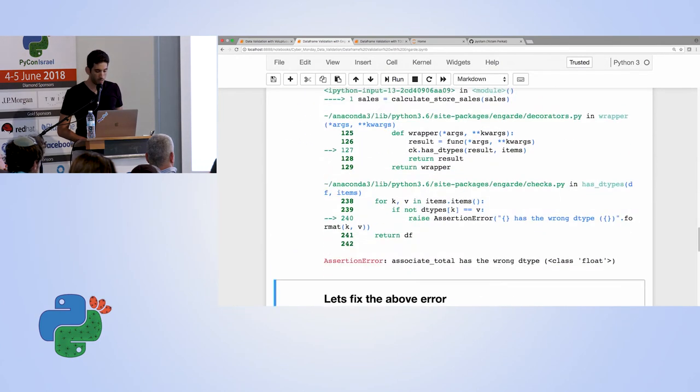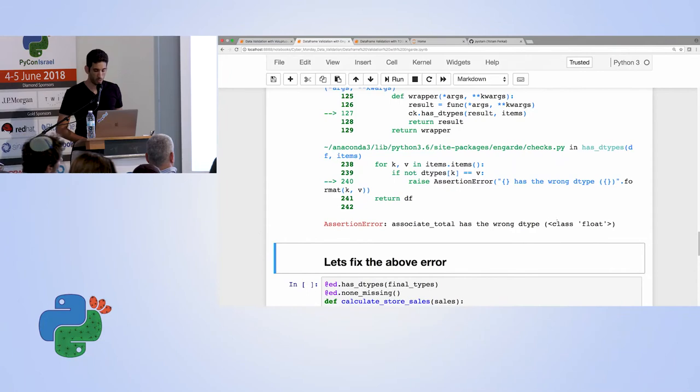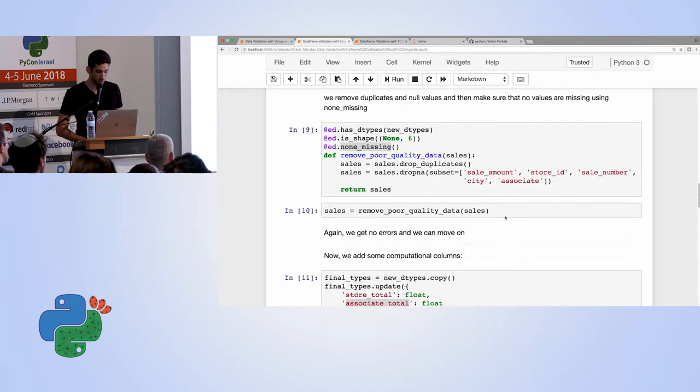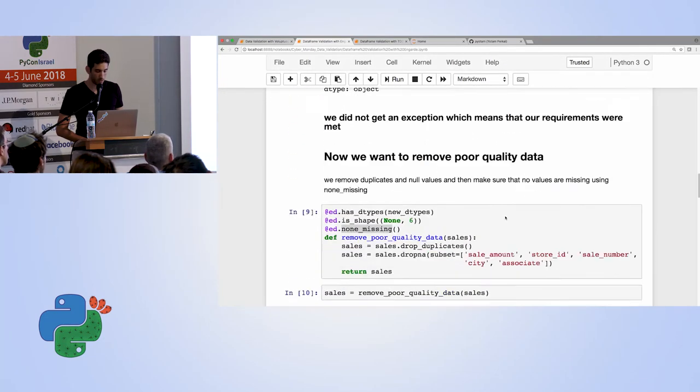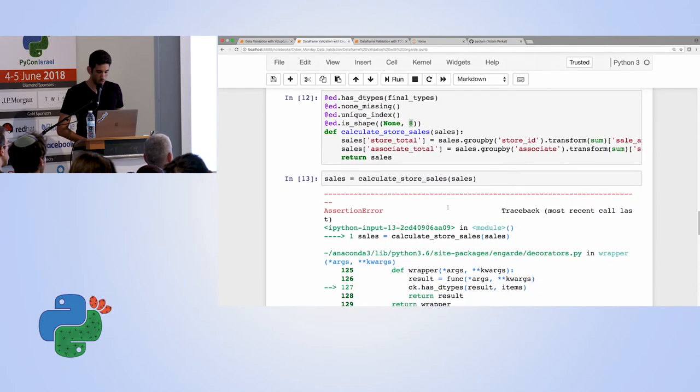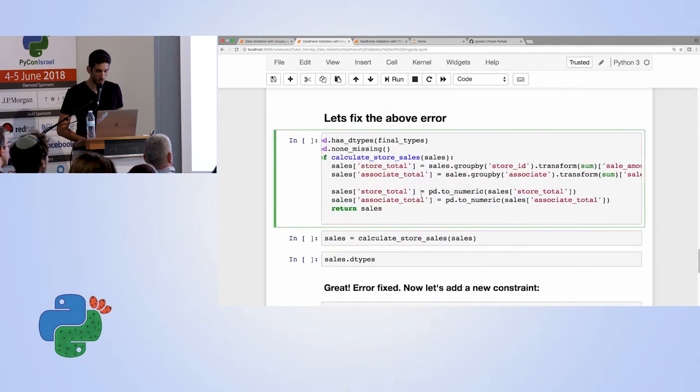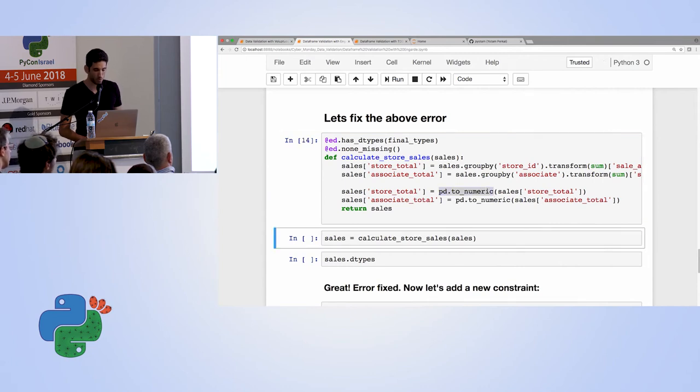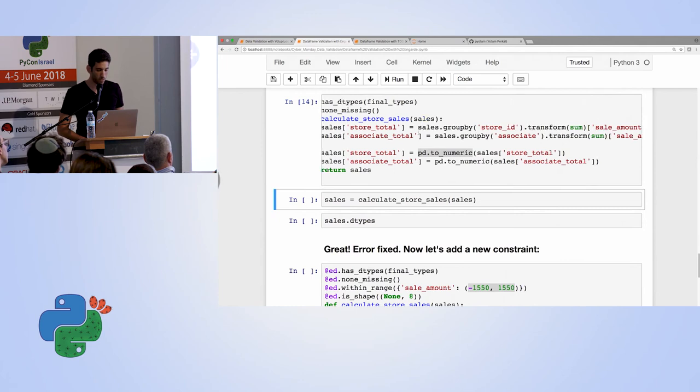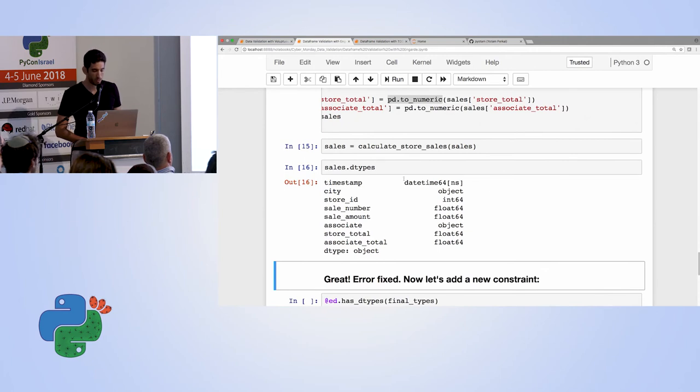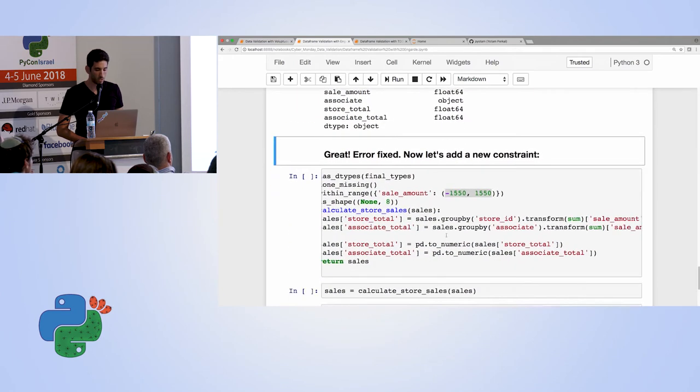So again, I'm performing the same operation, but I added this time I expect to have eight feature columns. And now when I run it, I get an assertion error which says associate total has the wrong data type. So I expected to get a float, right? Let's recheck. Yeah, to get a float value. And that wasn't the case. So let's simply use pandas to_numeric function to turn those types into what we expect. And then when we run it again, we can see that actually this time the assertion passes. And we can see that the new data types is exactly as we expected.